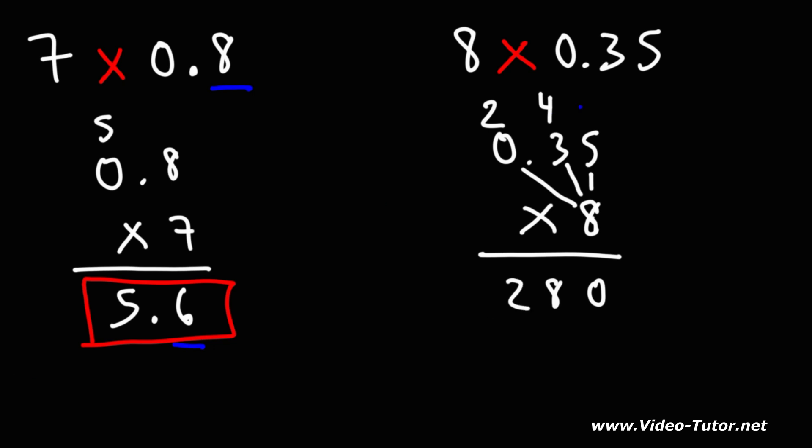Now, notice that we have only two digits to the right of the decimal point. So we're going to have two digits to the right of the decimal point as well. So we're going to put the decimal point here. Therefore, the answer is going to be 2.8 or 2.80.